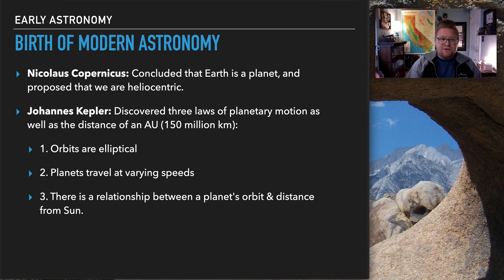So looking at the birth of astronomy. Copernicus concluded the Earth is a planet and proposed that we are heliocentric, meaning that we're not the middle, that we are offset. The Sun is going to be our middle aspect and then all the planets outside from the Sun within our little model all operate together. So Johannes Kepler discovered the three laws of planetary motion as well as understanding the distance of an AU, which is an astronomical unit, which is about 150 million kilometers.